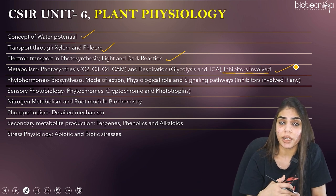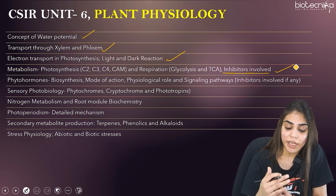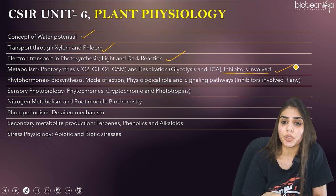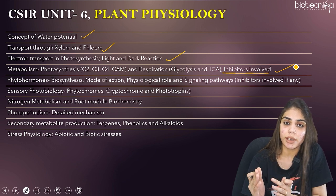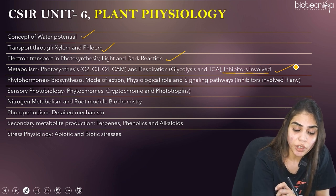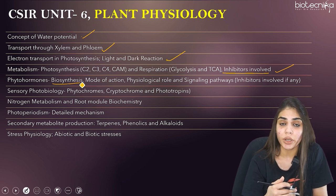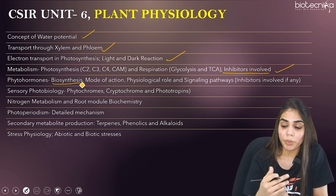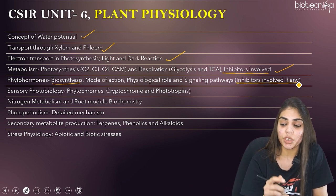Phytohormones are the most important section of plant physiology. There are eight different phytohormones and you can get questions from any of them — do not skip any. For each phytohormone, study its biosynthesis, mode of action, physiological role, signaling pathway, receptor location (cytosol or membrane-bound), and any inhibitors. Examples include gibberellins and auxins.